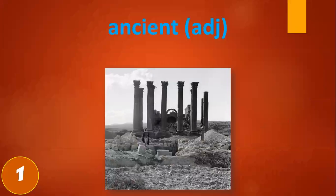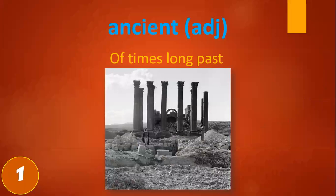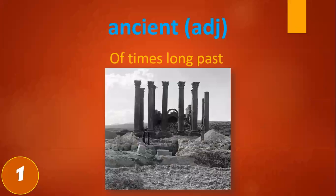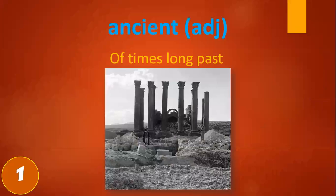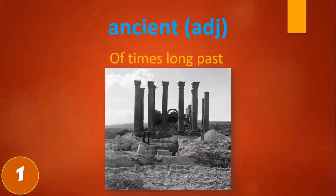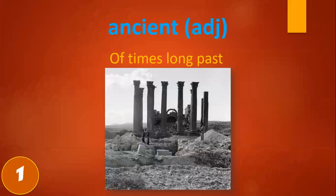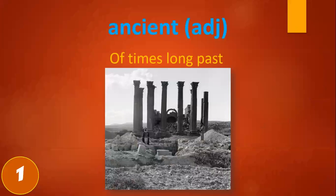The first word in our selection is 'ancient.' This word is an adjective and it means 'of times long past' — when you talk about something that happened in the long past, especially ruins and different places. For example, an ancient building.